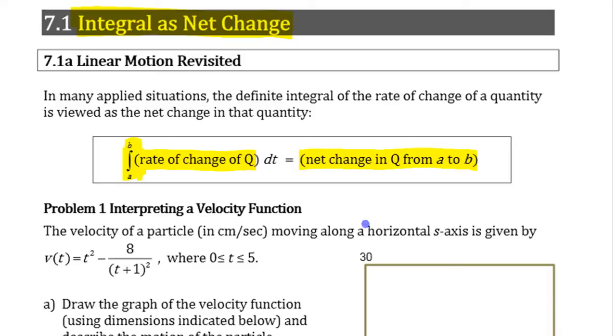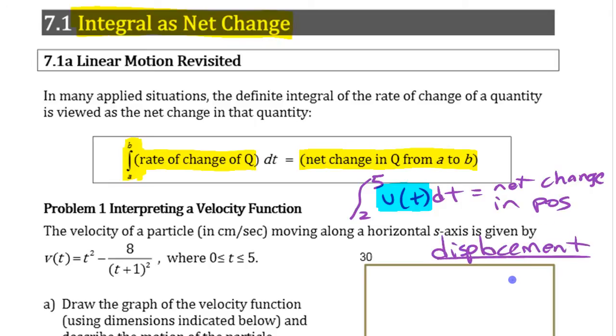The simplest example of this is using velocity and position. The integral from 2 seconds to 5 seconds of some velocity function, or in other words, the integral of the rate of change of position, is going to be equal to the net change in position, or in other words, the displacement.